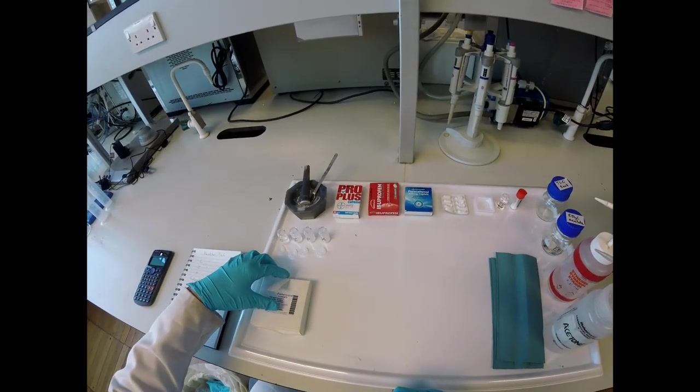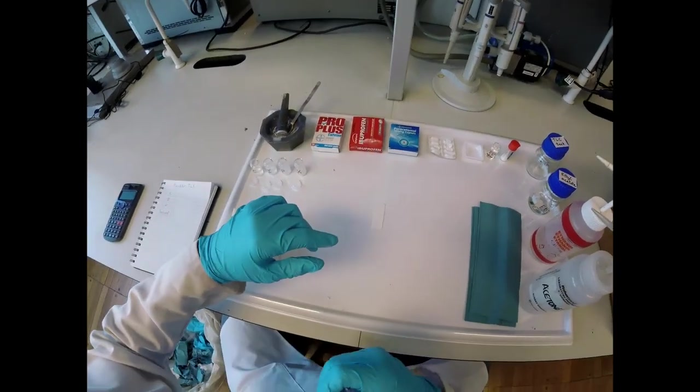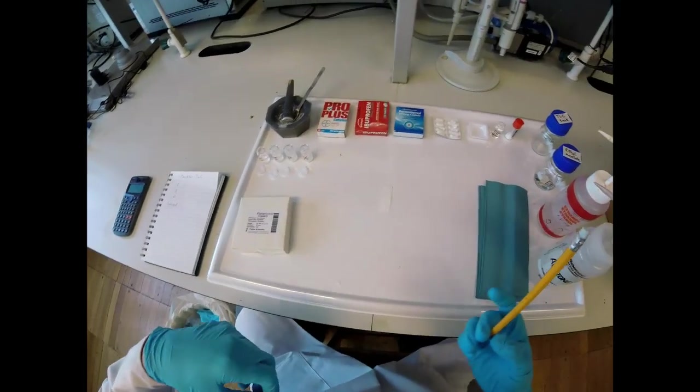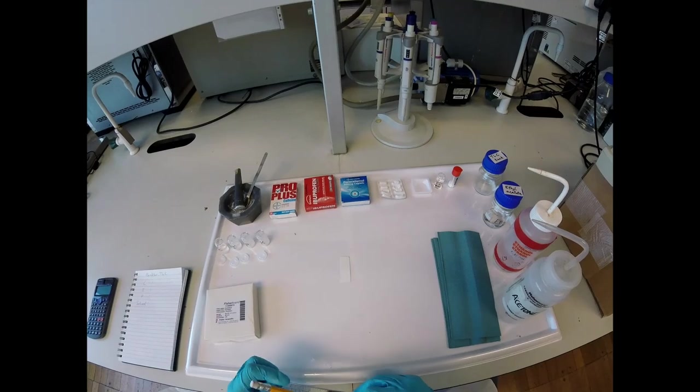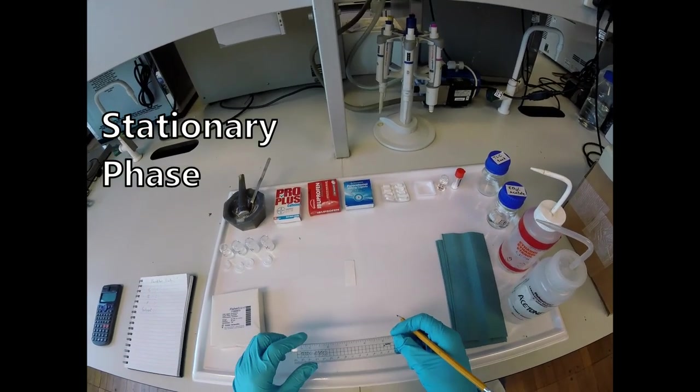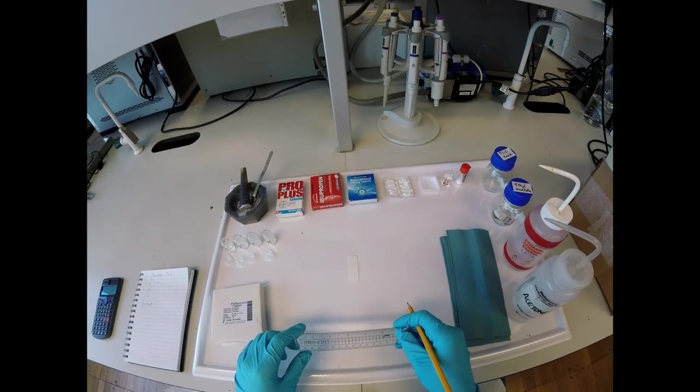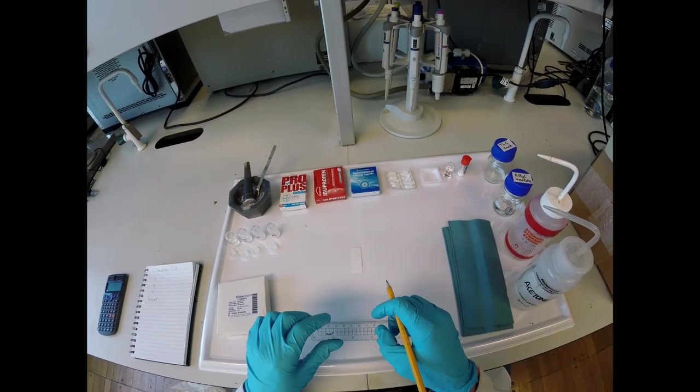With our complete set of samples made up, the next thing we need is a TLC plate to run it on. The TLC plate consists of a layer of silica which is our stationary phase on a support of aluminum. The aluminum could also be glass or indeed plastic.